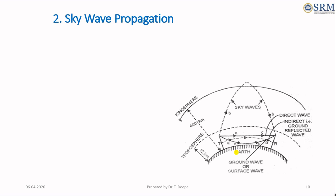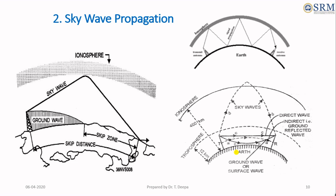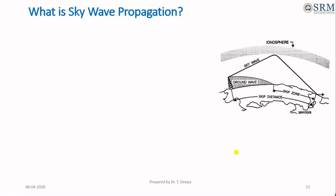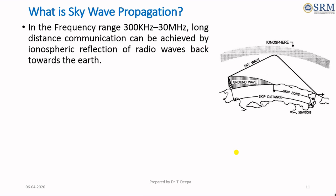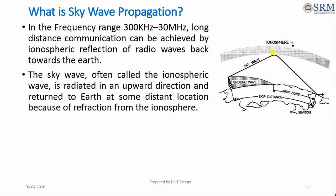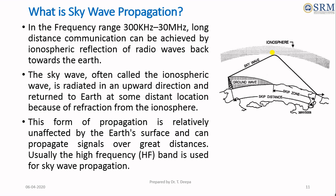The second mode of propagation is sky wave propagation. In the frequency range from a few megahertz to 30 MHz, long distance communication can be achieved by ionospheric reflection of radio waves back towards the earth. This mode of propagation is called sky wave propagation. The sky wave, often called the ionospheric wave, is radiated in an upward direction and returned to the earth at some distant location because of refraction from the ionosphere. This form of propagation is relatively unaffected by the surface and can propagate over long distances. Usually the high frequency band is used for sky wave propagation.